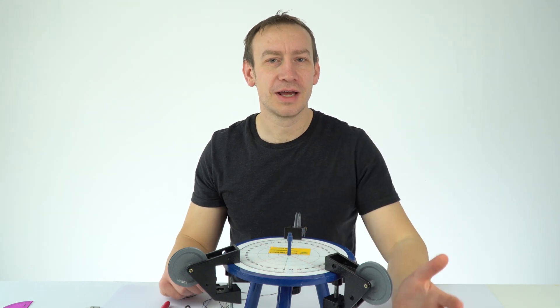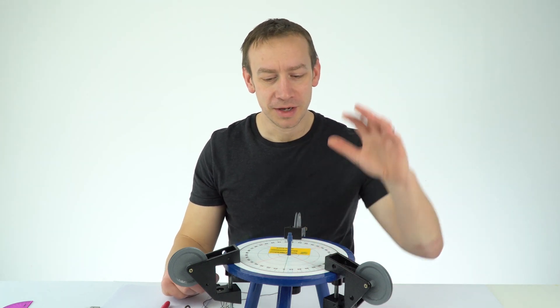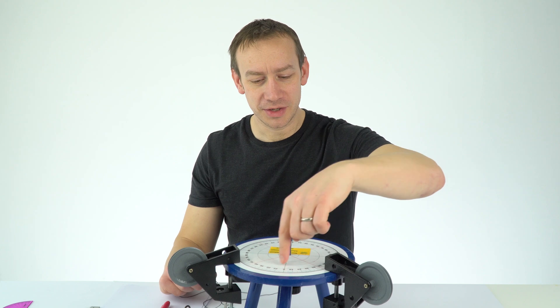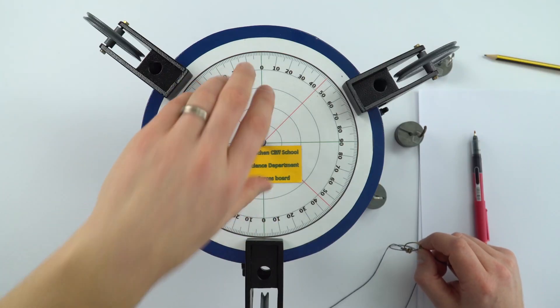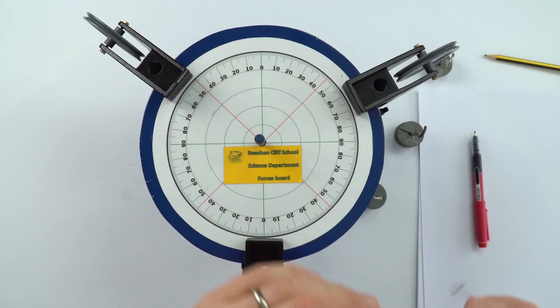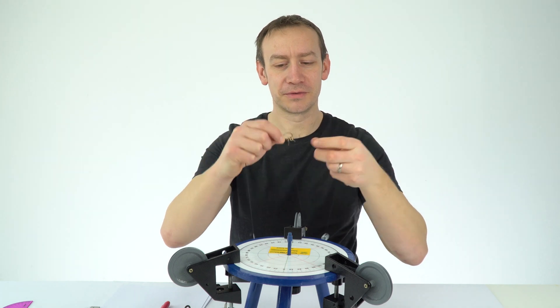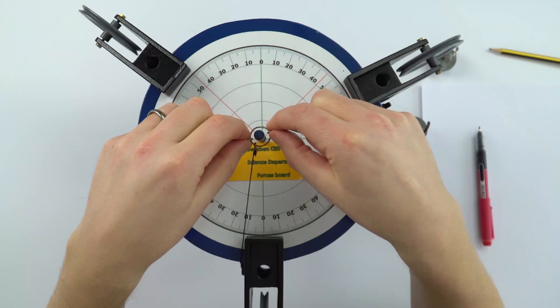This small device can be used to look at forces in equilibrium. We've got a small table which has a protractor printed out and stuck on top of it. We then have three pulleys and over this we have three bits of string which are attached to this loop in the center.